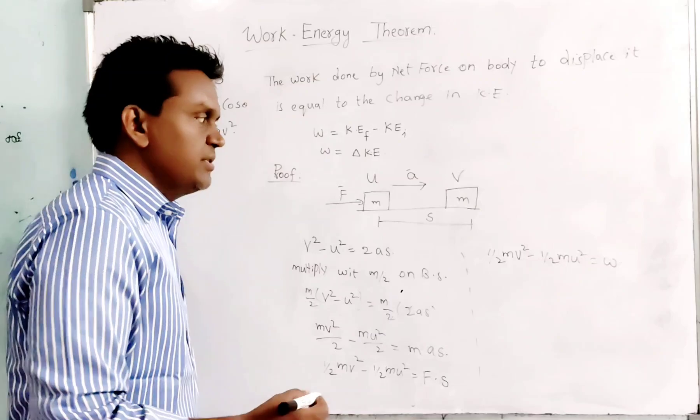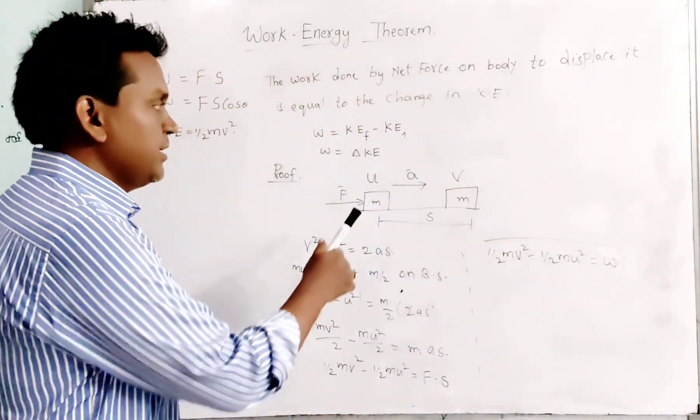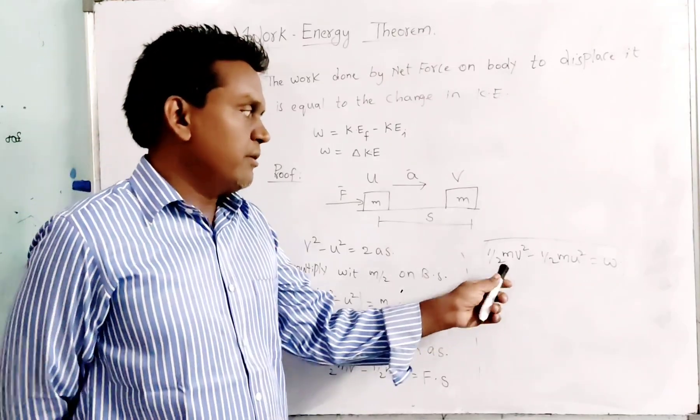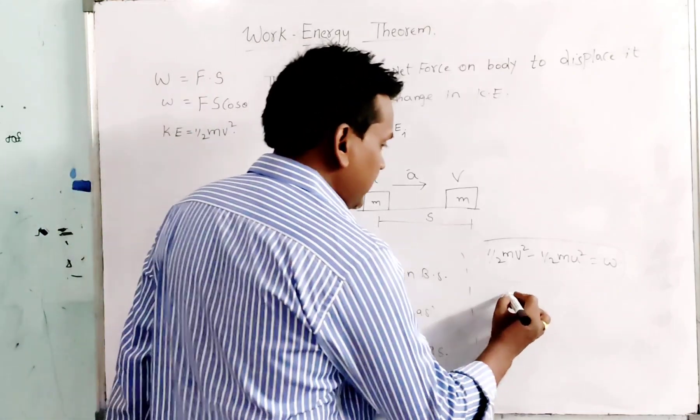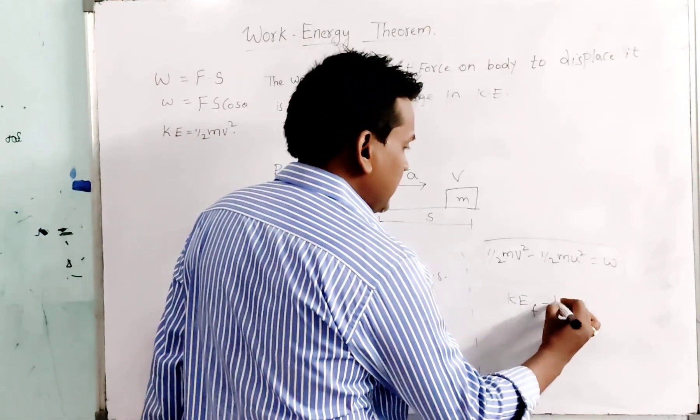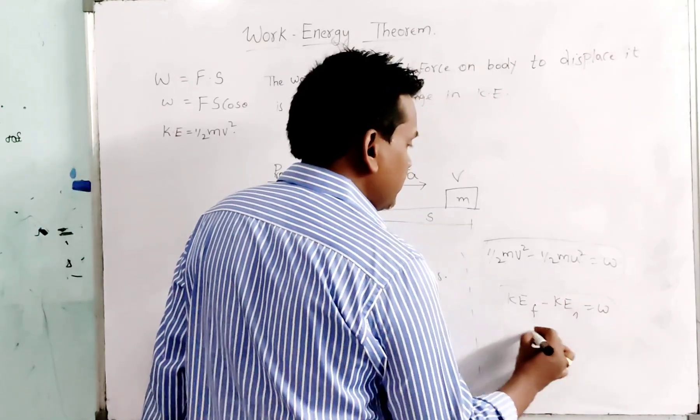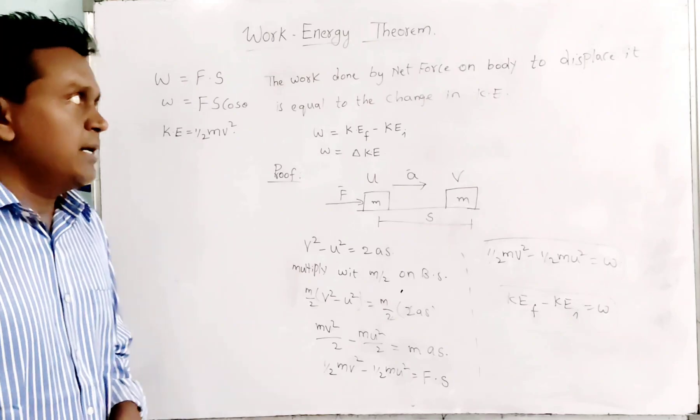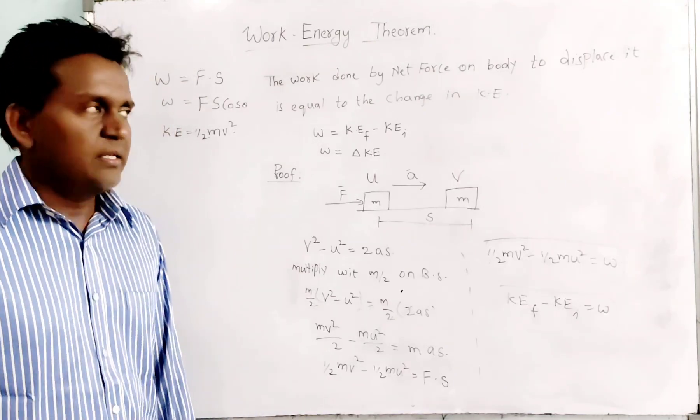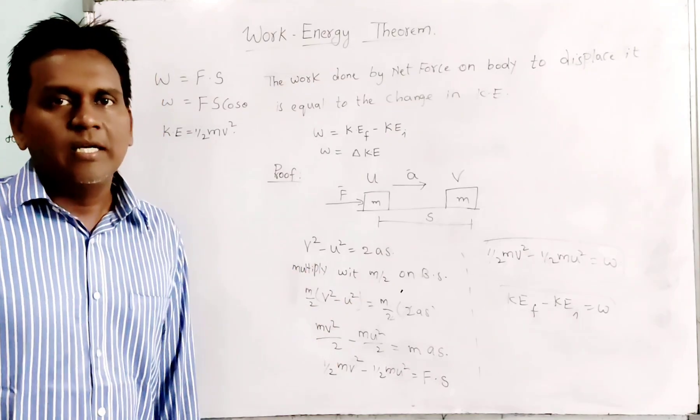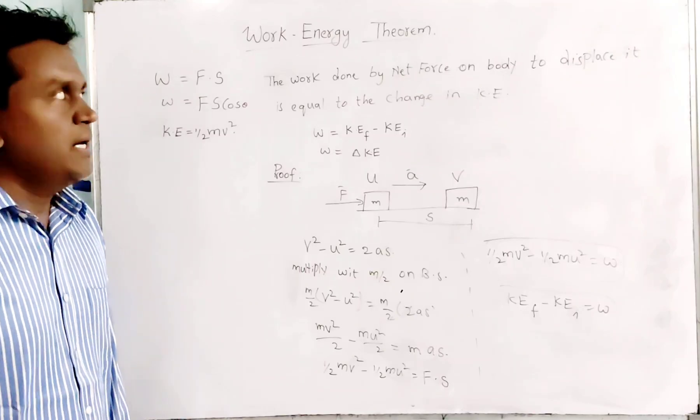That means half MV square minus half MU square is equal to work done on the body. Here half MV square is the final kinetic energy, as V is final velocity and U is initial velocity. KE final minus KE initial equals work done W. So the work done by net force on a body to displace it is equal to the change in kinetic energy of the body. This is the work-energy theorem.